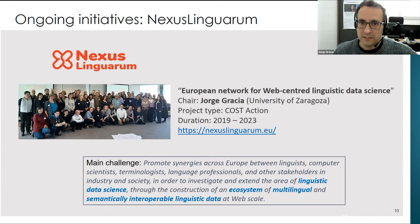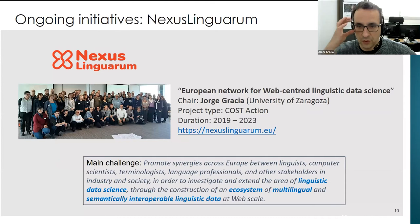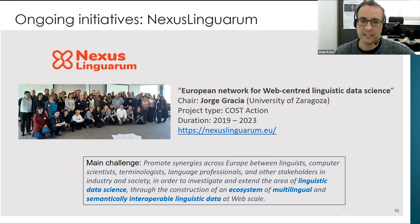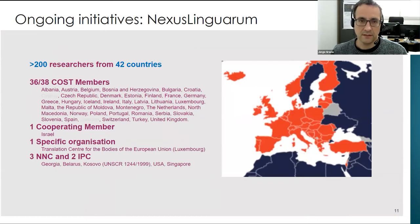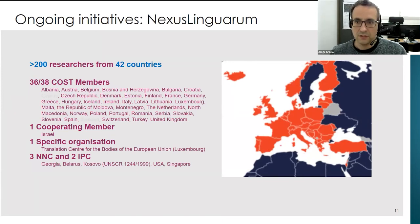Let me start with Nexus Linguarium — this is a COST Action, so it is not a research project per se, but a European network for web-centered linguistic data science. The idea is to promote in Europe the area of linguistic data science and build an ecosystem of multilingual and semantically interpretable linguistic data, bringing together different stakeholders: linguists, computer scientists, terminologists, and so on. This COST Action is large — we have 42 countries participating as full members, near-neighbor countries, observers, and so on.